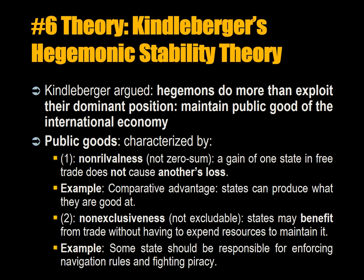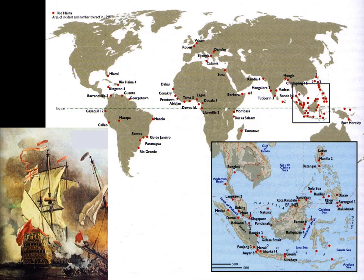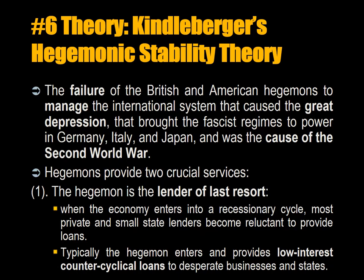It is like dealing with pollution — when you lower pollution, everyone wins, but you also can't stop other countries from benefiting from the drop in pollution. So some states should be responsible for enforcing navigation rules and fighting against piracy, which reduces trade. Here you have incidents of piracy at the end of the 20th century and a British ship fighting the Barbary pirates off the coast of North Africa.